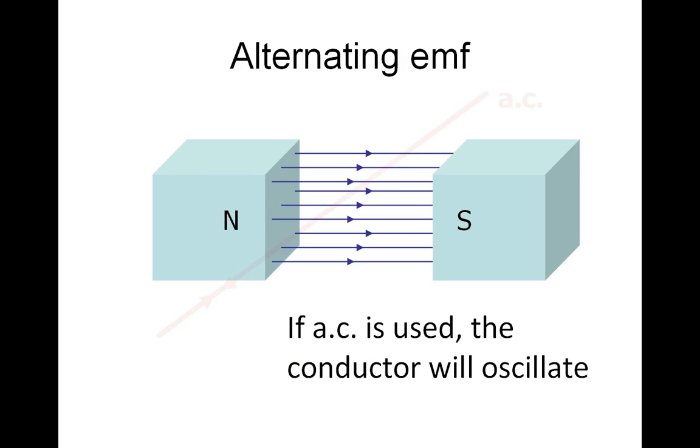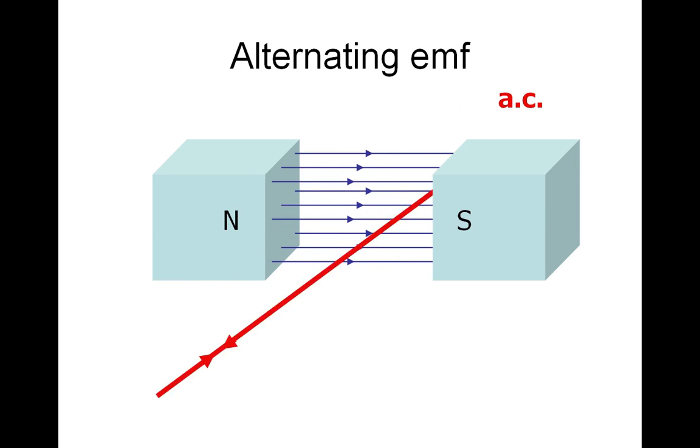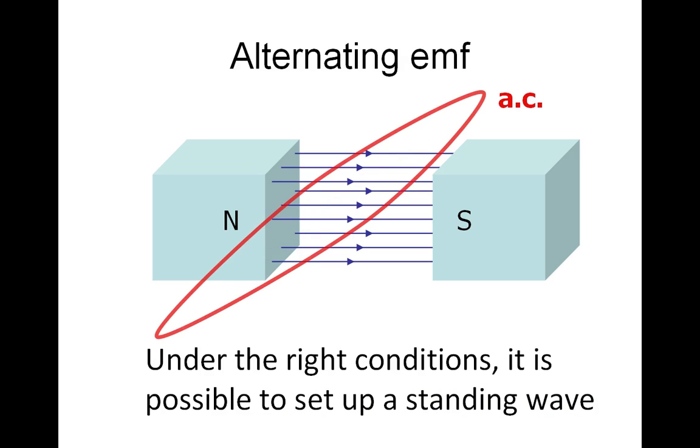If we have alternating current, the conductor oscillates depending on the frequency of the AC. Current flows backwards and forwards, so the force is up, then down, then up, then down. With the right conditions, we can set up a standing wave. There's the fundamental mode of our standing wave.